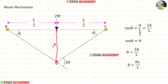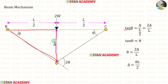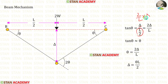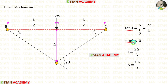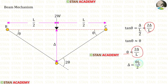Let us keep the displacement as delta. Taking the triangle formed, tan theta equals delta divided by L/2. Rearranging, tan theta equals 2 delta upon L. Since theta is small, tan theta is approximately equal to theta, so theta equals 2 delta upon L. From that we get delta equal to theta L upon 2.